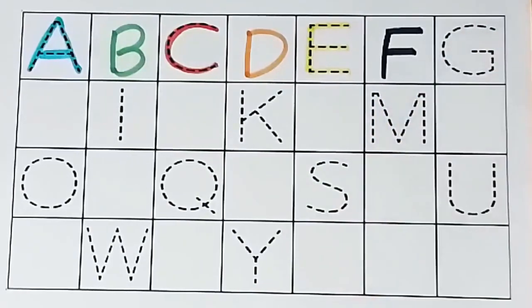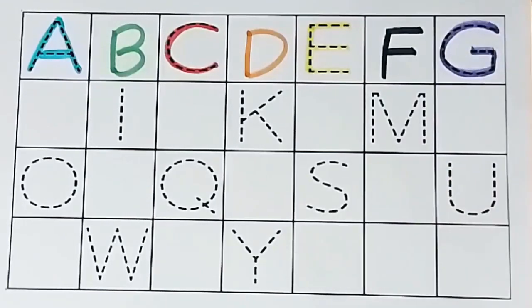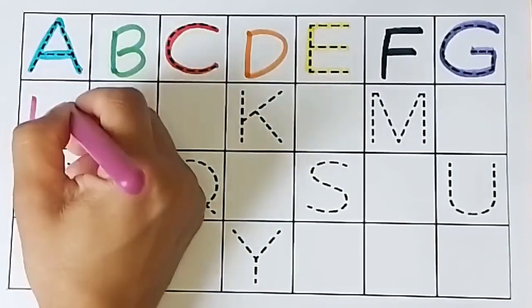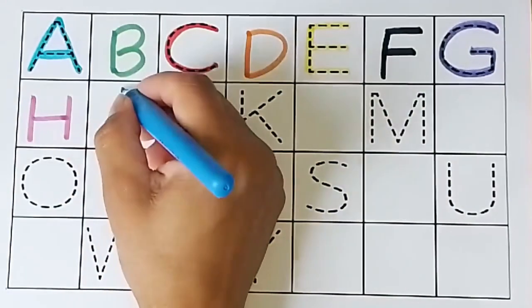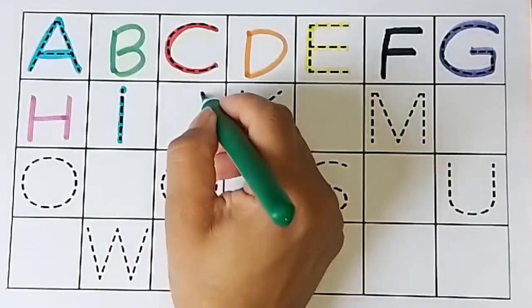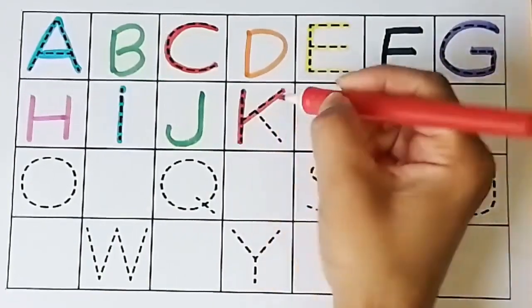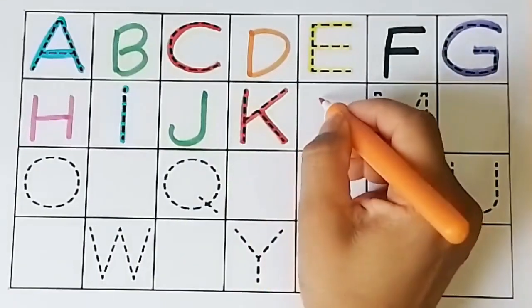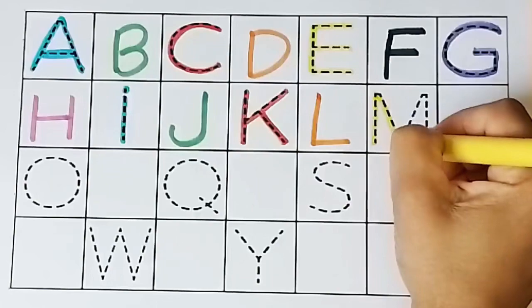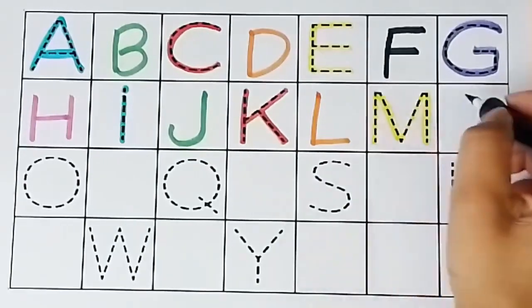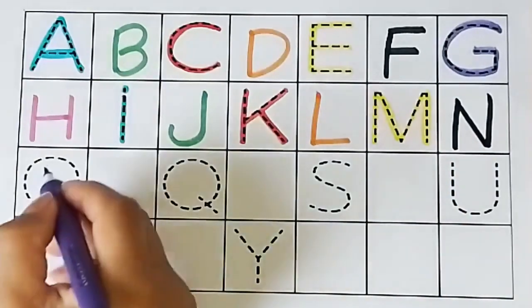Now I know my ABCs, next time won't you sing with me. G, H, I, J, K, H, I, J, K, L, Q, R, S, T, U, V, W, X, Y, and Z. Now I know my ABCs, next time won't you sing with me.